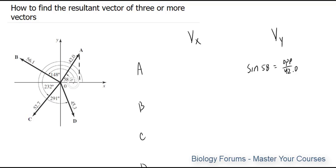And if we are doing the x components, we will use cosine, because cosine relates the adjacent, which is what we're looking for, and the hypotenuse. Cosine of 58 is equal to the adjacent over 42. We'll find the answer to that shortly. Let's figure out the formulas for B, C, and D as well.